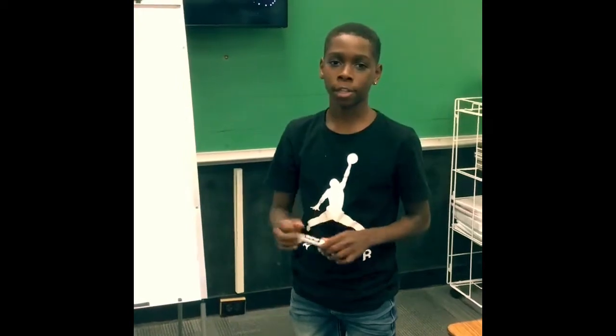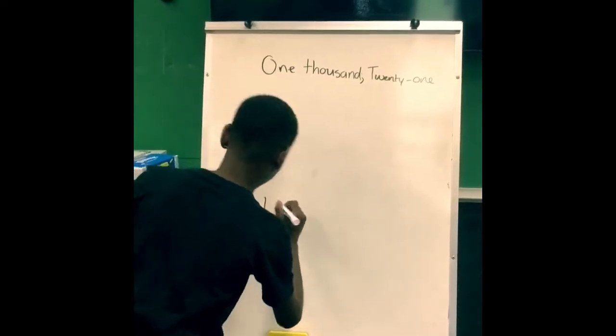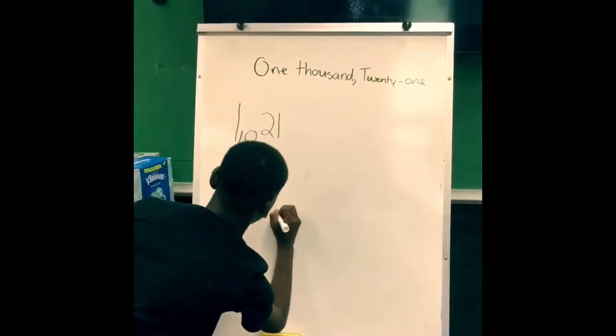I'm going to explain the short word form. So first, the number is 1,021. I'm going to put a 1, then I'm going to put thousand.